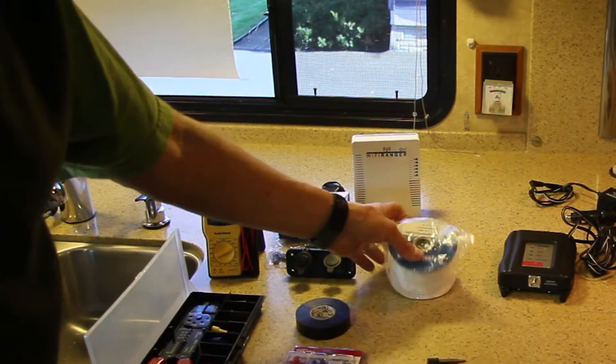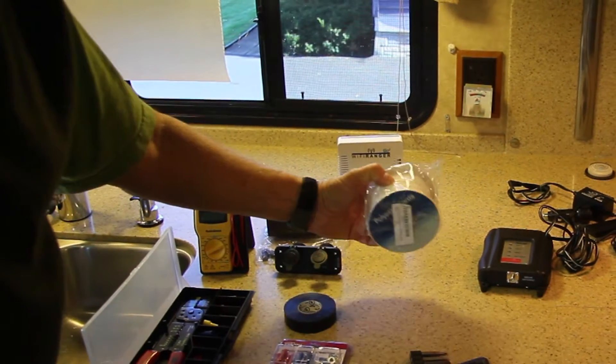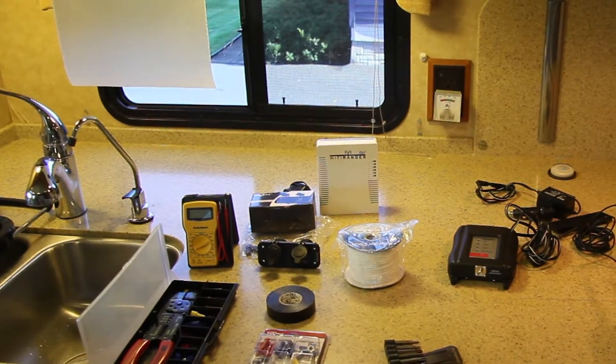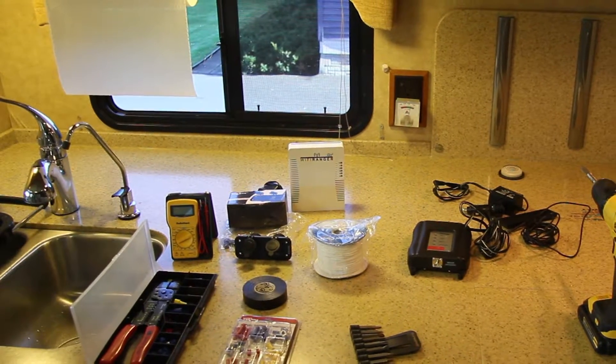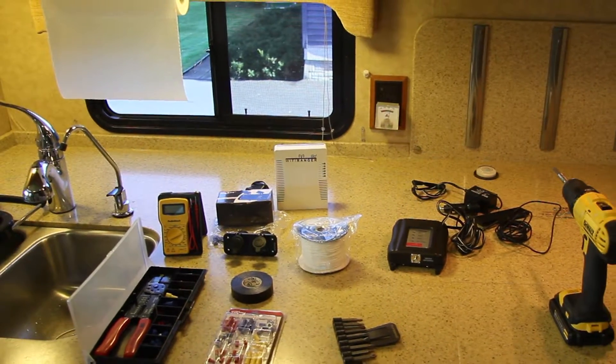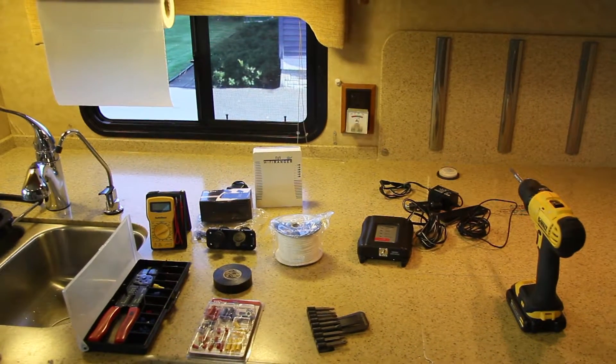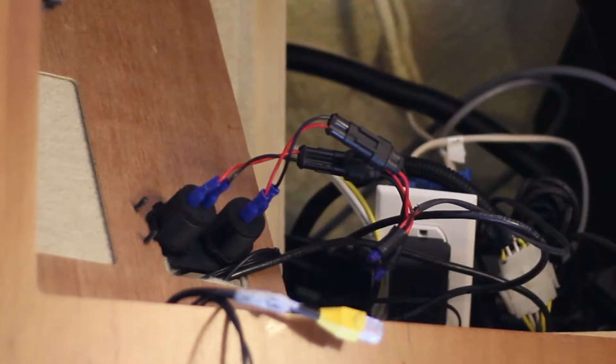To run the cable, we'll use nylon or polyester cord to use the existing cable run that goes from the satellite controller inside the RV out to the satellite.